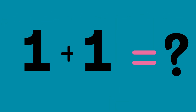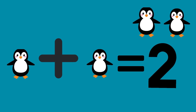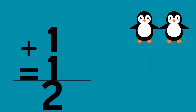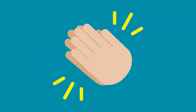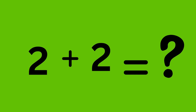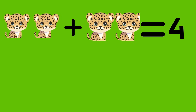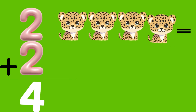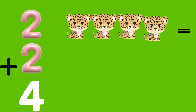One plus one equals two: one penguin plus one penguin equals two penguins. So, one plus one equals two. Two plus two equals four: two jaguars plus two jaguars equals four jaguars. So, two plus two equals four.